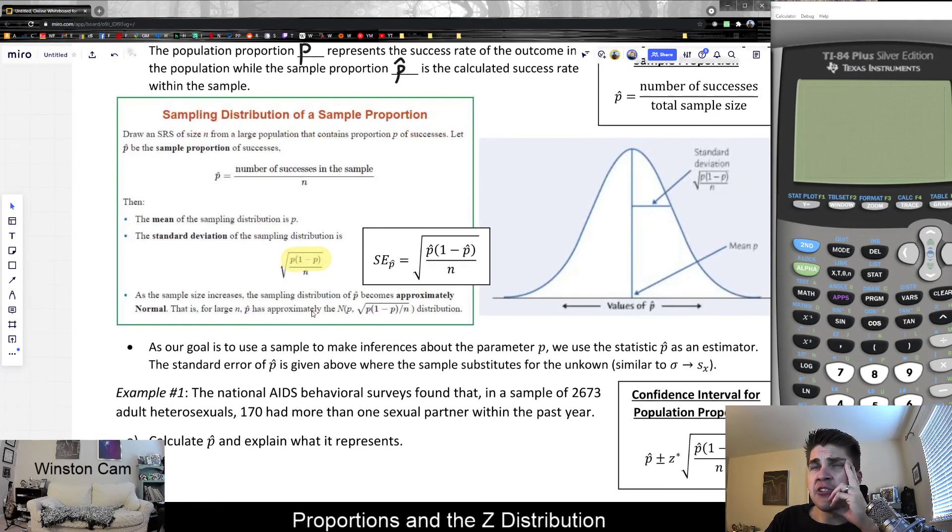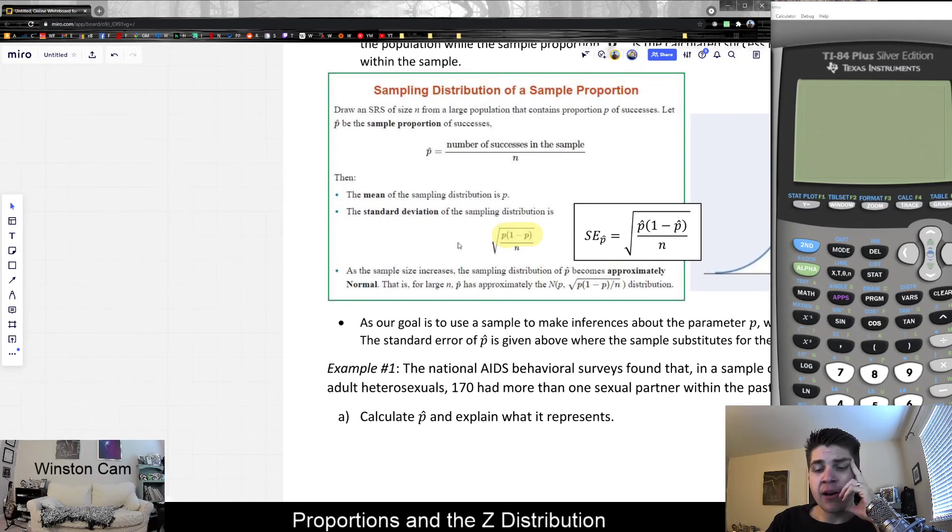The confidence intervals and the significance tests remain the same. The last thing I wanted to mention, a lot of times in previous examples, we're given sigma, the standard deviation of the population.